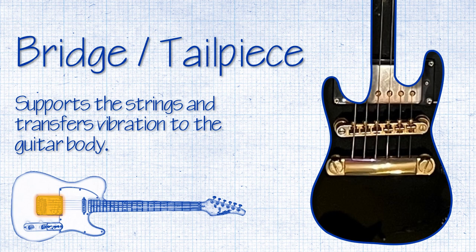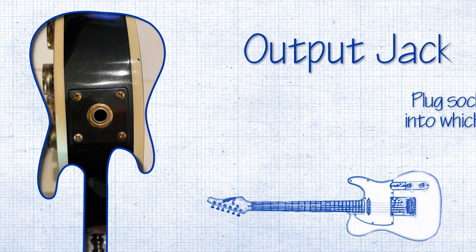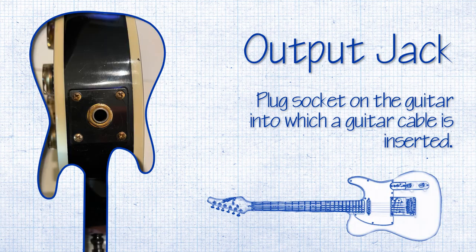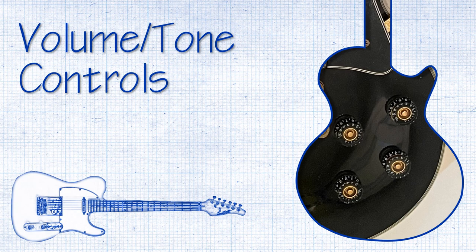The bridge of the guitar is set near the base of the guitar body and is where the guitar strings start. The bridge also transfers string vibrations to the body. The output jack is a quarter-inch mono output on the guitar into which a guitar cable is inserted.